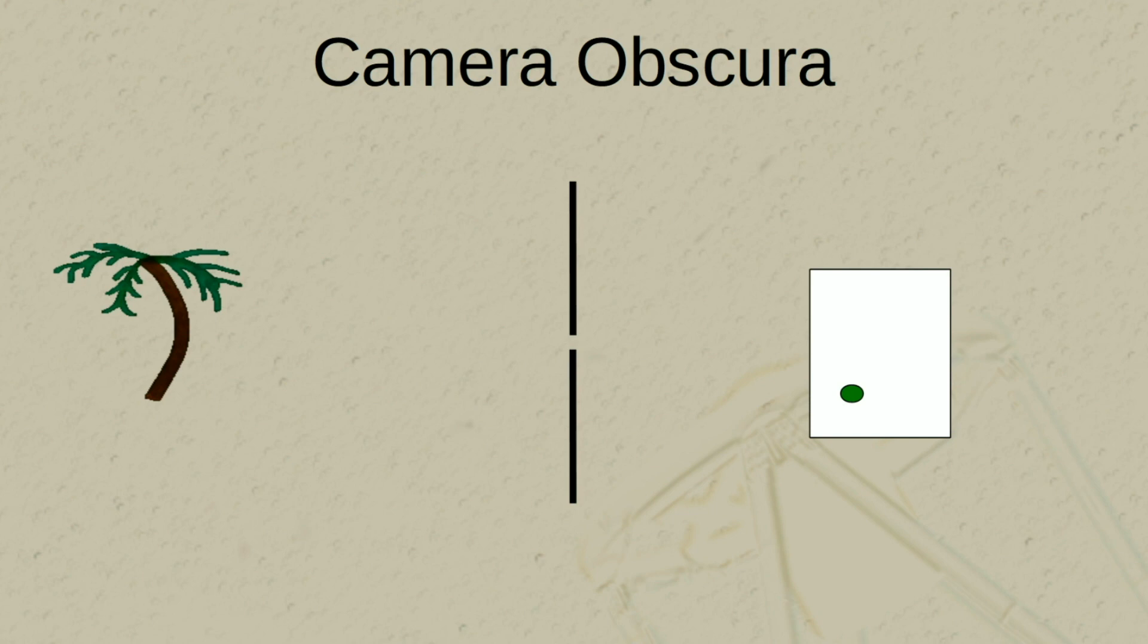Now we consider another point on the palm tree. Let's say over here at this leaf, the only light from that leaf that makes it to the screen, again, has to pass through this small opening. And so the only place that the light makes it to is a small spot on the screen here. And again, it will make a lit up green spot on the screen.